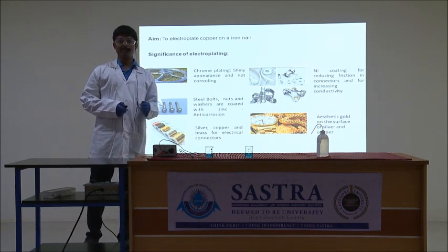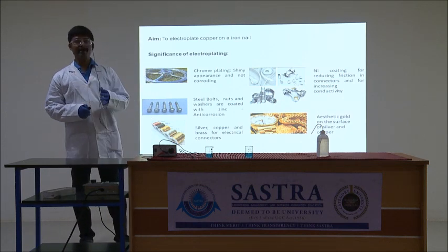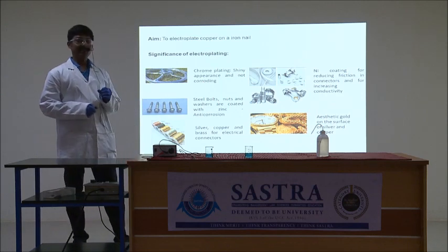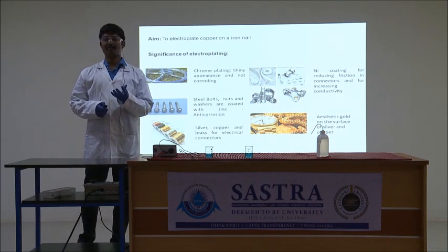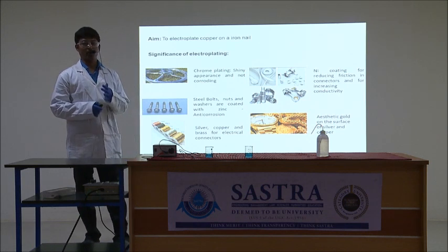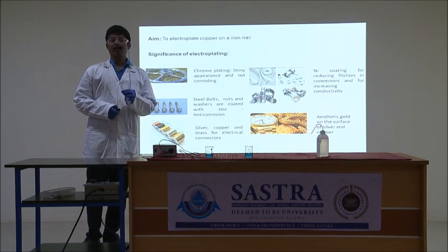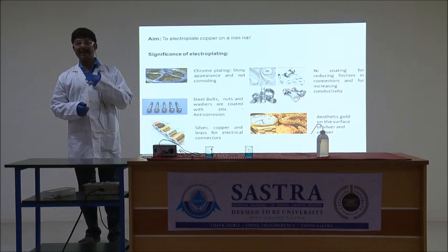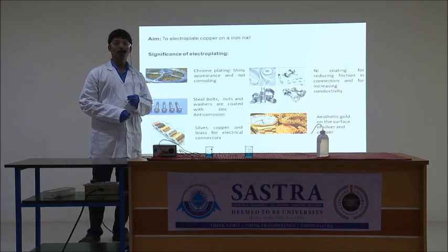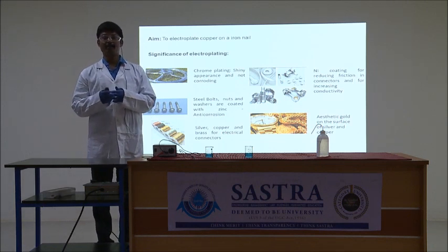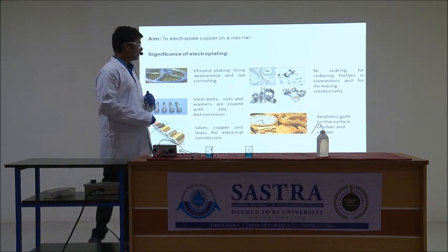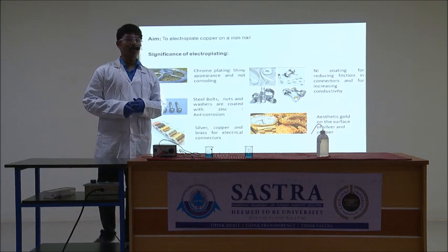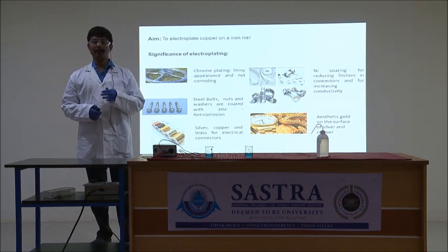Electrolysis is very useful in the automobile industries. For example, chrome plating for vehicles gives shininess to the material as well as increases corrosion resistance. Steel bolts, nets, and washers are coated with zinc to improve anti-corrosion properties. Silver, copper, and cross wires are made using the electroplating process to improve the electrical conductance of the material. Zinc coating is used for reducing friction between connectors and to improve connectivity. Aesthetic gold is put on the surface of copper and silver to improve the value of the material as well as to reduce the cost.